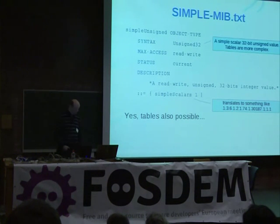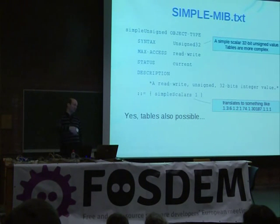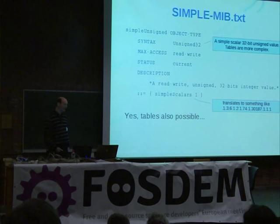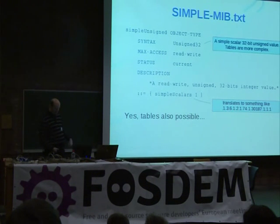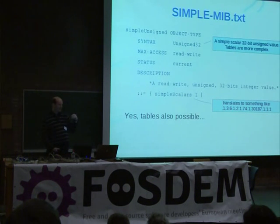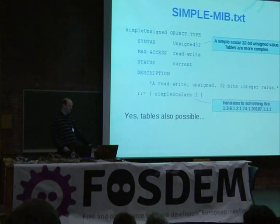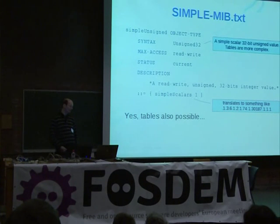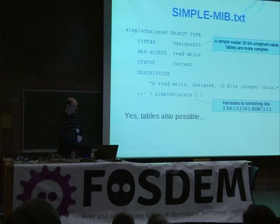Let's look at how we would implement a MIB. This is basically the ASN notation for constructing MIBs. You give it a name, tell it the data type — in this case an unsigned 32-bit scalar value. Max-access and so on. You give it a description, and you give it a reference for where in the SNMP MIB tree you want this object to appear. This simple scalar translates to something like .1.3.6 et cetera. It's a simple example — just an integer value to make available. You can also do tables, but that's way more complex, though it is supported.